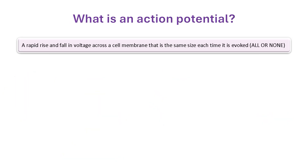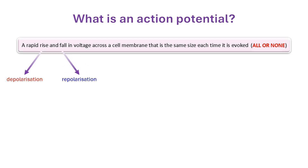An action potential is a rapid rise in the voltage, or potential difference, across a cell membrane, followed by return to the original level. In normal circumstances, an action potential has the same amplitude each time it is evoked — there are no intermediate levels. This is known as an all-or-none response to stimulation. When applied to a cell membrane, the rise in voltage is termed depolarisation, while the fall is known as repolarisation.